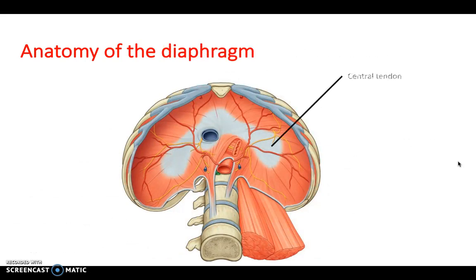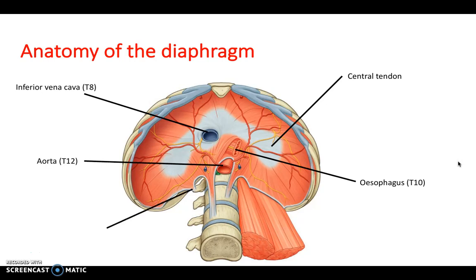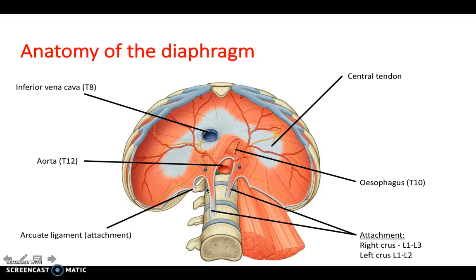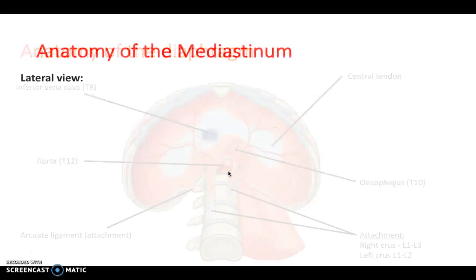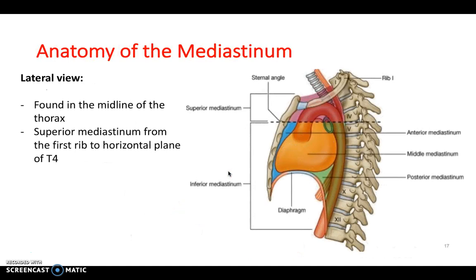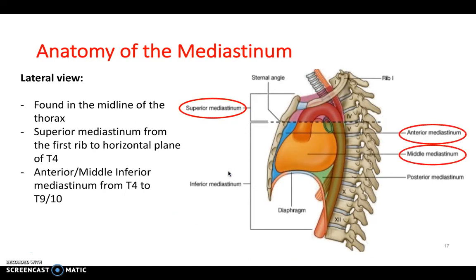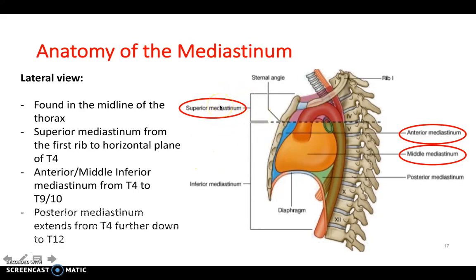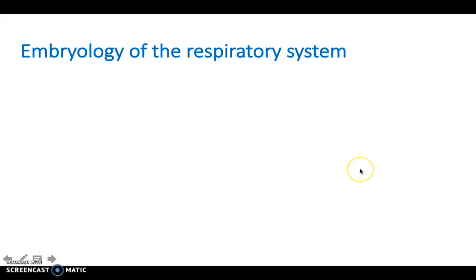Looking underneath the diaphragm, you can see the central tendon, and the three structures passing through: the inferior vena cava, the esophagus, and the aorta — answering an earlier question. The diaphragm attaches via the arcuate ligament to the transverse process of the vertebra, and the crura attach on the right at L1–L3 and on the left at L1–L2. The mediastinum has a superior region and an inferior region subdivided into anterior, middle, and posterior.